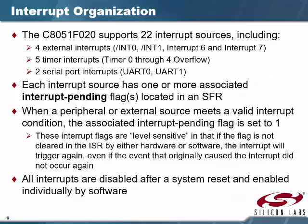Now getting into some details — the final exam doesn't have any of these details. We have four external interrupts — interrupt zero, one, six, and seven — tied to pins on the microcontroller through the crossbar. We have five timers — though our processor may only have three — and two serial port interrupts, giving us many multiple interrupts. Each interrupt has one or more interrupt pending flags in the special function register. When a peripheral generates a valid interrupt, the associated flag is set to one.